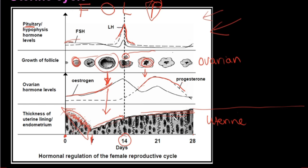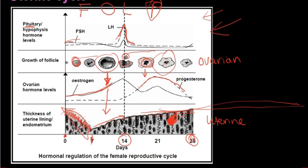As the egg cell travels down the fallopian tube, the leftovers of the Graafian follicle turn into the corpus luteum because of the LH that has been secreted. The corpus luteum takes over, secreting a little estrogen but mainly progesterone — there's a spike in progesterone, and in the uterine cycle the endometrial lining is still maintained. If implantation is successful, the corpus luteum secretes progesterone for 12 weeks. If fertilization did not occur, after day 28 we start again at day 0 — the endometrial lining is shed and that is menstruation.